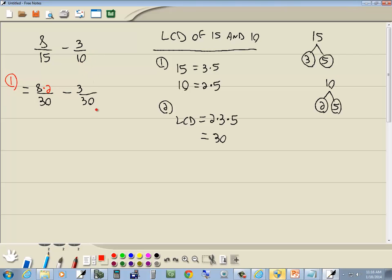On our second fraction, we got 10, we went to 30. We multiplied the bottom part by 3. So we have to multiply the top part by 3. Well, 8 times 2 is 16. So we got 16 over 30, minus 3 times 3 is 9, over 30.